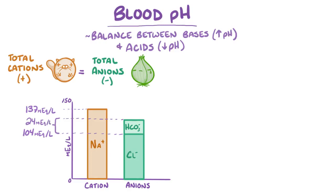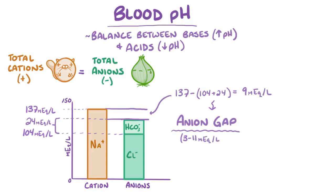The rest are unmeasured, so just counting up these three ions, there is usually a difference or gap between the sodium concentration and the sum of the bicarbonate and chloride concentrations in the plasma, which is 137 minus 128, which comes from adding chloride and bicarbonate, and so you end up with 9 mEq per liter. This is known as the anion gap, and normally it ranges between 3 and 11 mEq per liter.